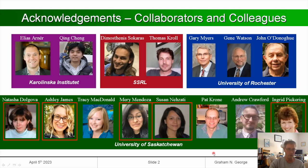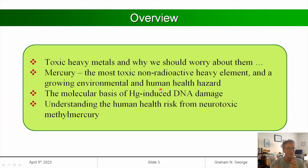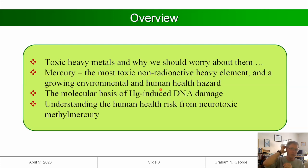What am I going to talk about? First I want to convince you that we should be worried about toxic metals in our environment — in particular mercury. Then I'll talk about the molecular basis of mercury-induced DNA damage, which is an underappreciated problem. Then we'll change gears and think about neurotoxic methylmercury and organometallic mercury species.